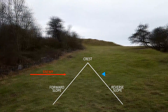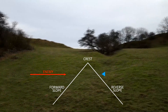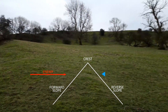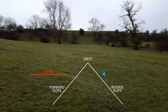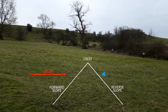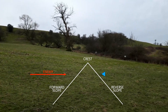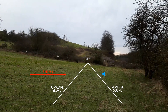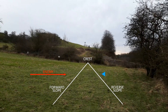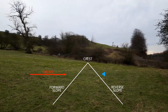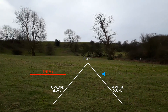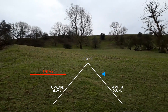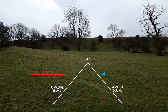So we have very short fields of observation and fire. The enemy can get all the way across the valley and up the forward slope before we can even see them, never mind engage them. But on this side of the crest, the ridge is now shielding us from enemy observation and fire. If the enemy has a lot of firepower, we're going to be a lot safer on the reverse slope where they can't see us.